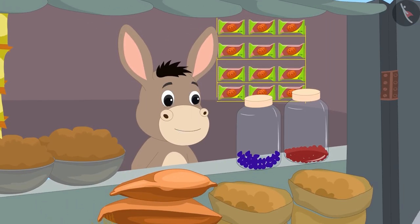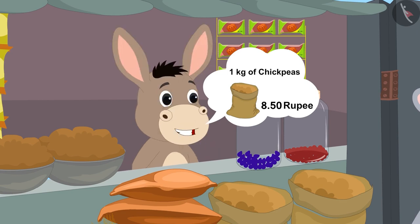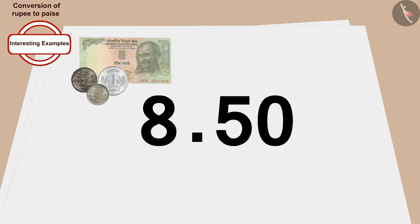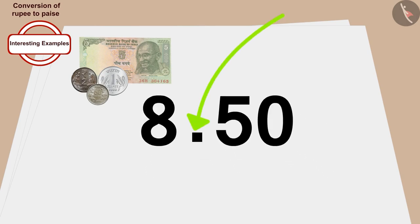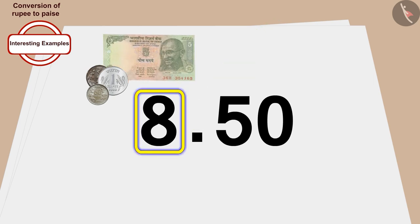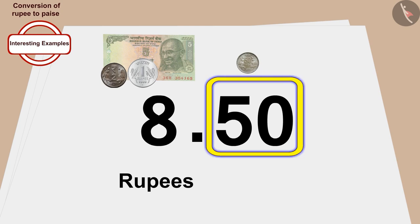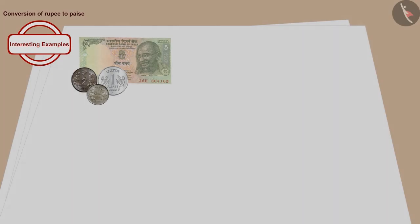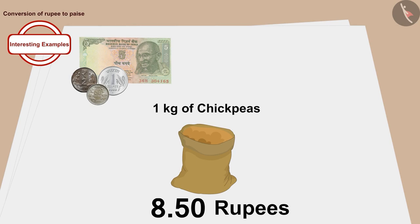Bola told him that one kg of chickpeas is worth eight rupees 50 paise. Children, do you know that we write the price of any item this way as well? The number written to the left of the dot is in rupees and the number written to the right of the dot is in paise. In this way, the price of one kg of chickpeas is eight rupees 50 paise.